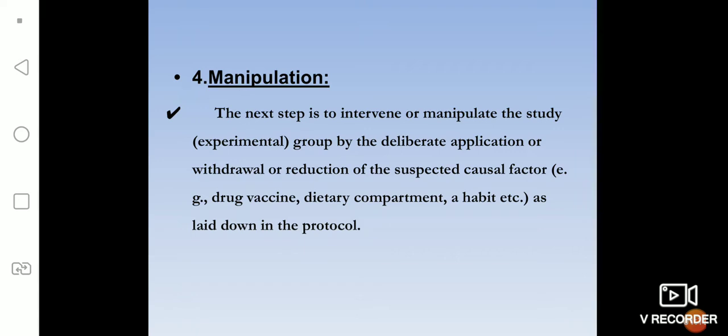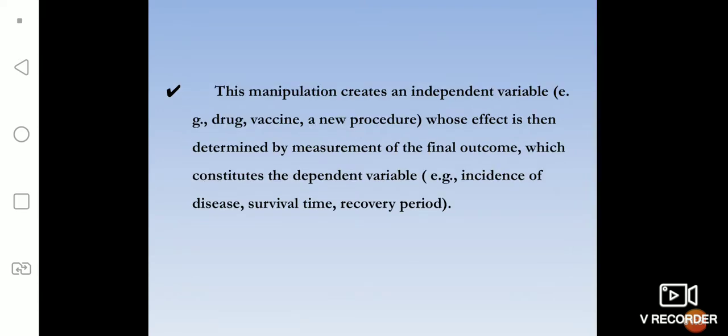For example, we either give a particular drug for the treatment of the disease, or we remove a particular dietary component which can give rise to some health complication, or we withdraw a particular habit so that a particular disease will not occur. We manipulate at this stage, following the protocol, to bring out the change we are looking for in the experimental group.